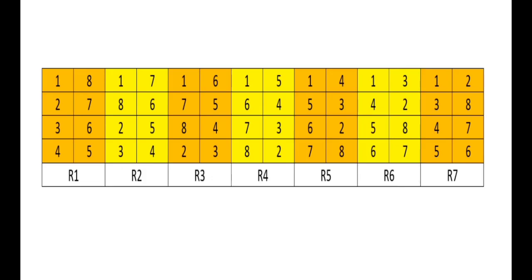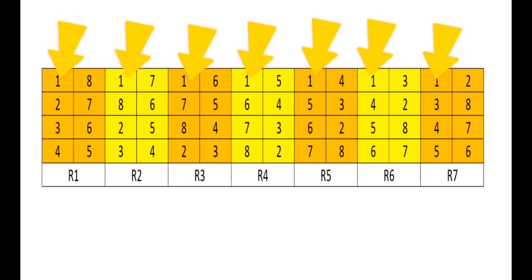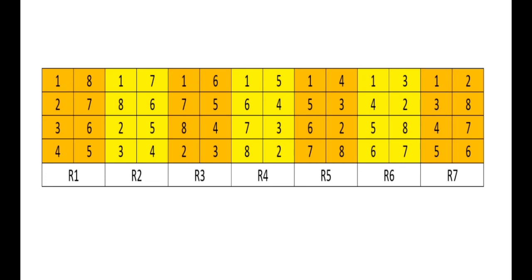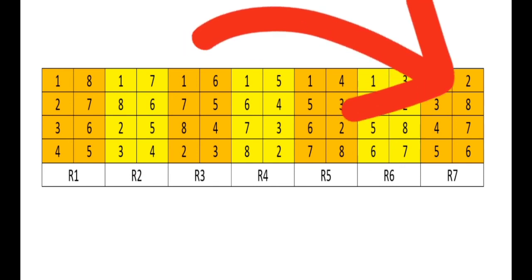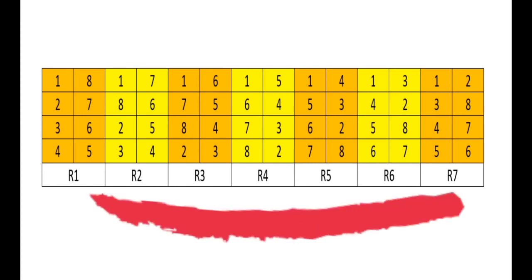To assign teams for each game without repetition, we use the rotation method. Team 1 remains fixed while the other teams rotate counterclockwise. So the sequence is 1, 2, 3, 4, 5, 6, 7, and 8. With Team 1 fixed, the next position takes 8, giving us the order 1, 8, 2, 3, 4, 5, 6, 7, and we continue the rotation until the last round. As shown in the table, there are 7 rounds covering 28 games. The winner of this tournament is the team with the most wins across all games.